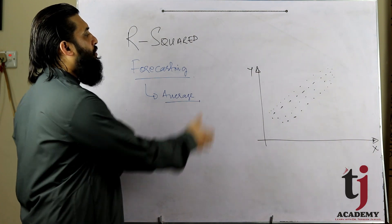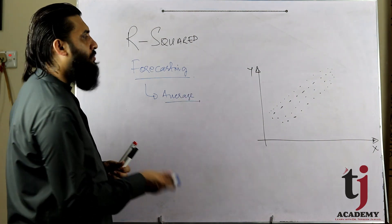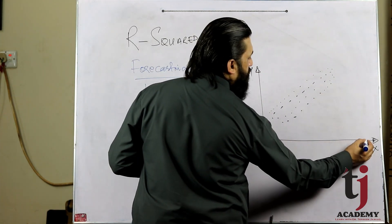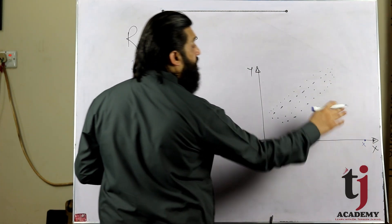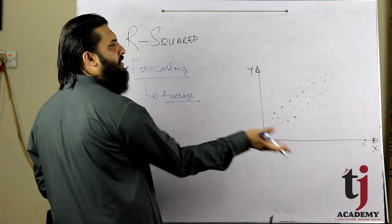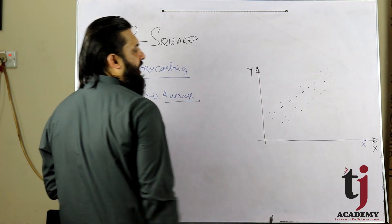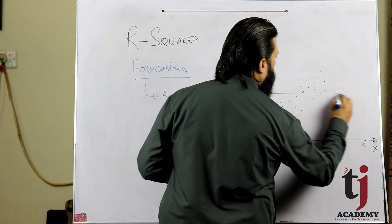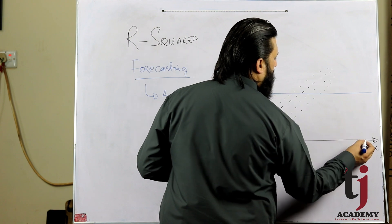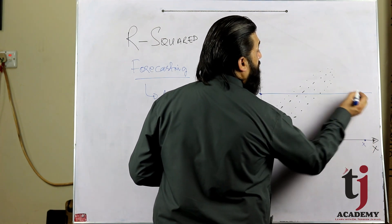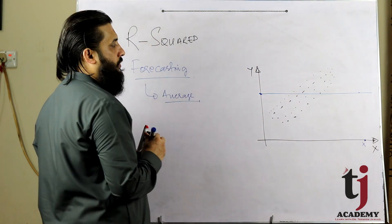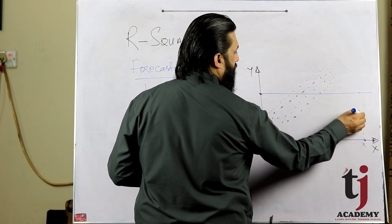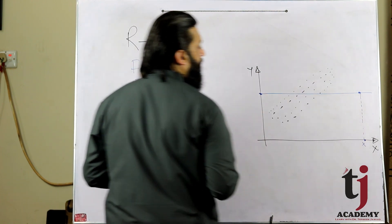So we can forecast y using the average method. If we have not used x, and y is unknown, then y equals the average value. If x is on average, then y is on average as well. This represents the baseline forecasting approach.